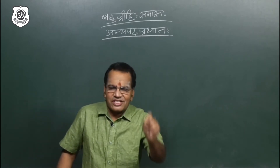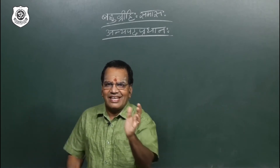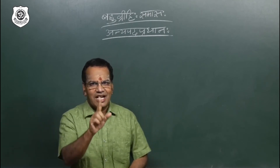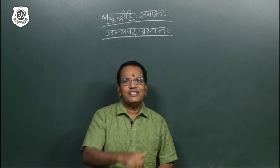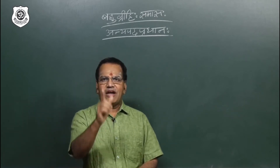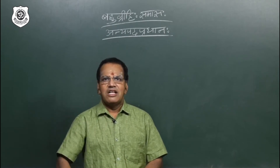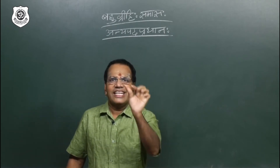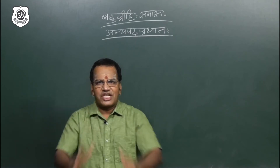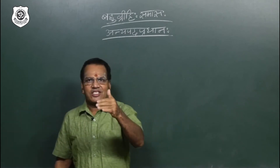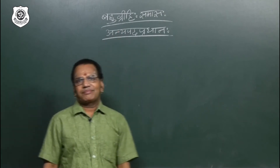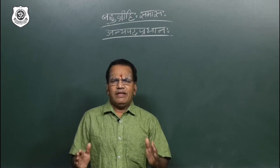So the expound is: Dasha Ananani Yasya Sah. Dasha Ananani ends with neutral gender plural. Then Tat Shabda pullinga prathama vibhakti ekavachanam is Sah. Therefore: Dasha Ananani Yasya Sah = Dashanana. This is the expound of Dashanana, and the name of this compound is Bahuvrihi Samasa.